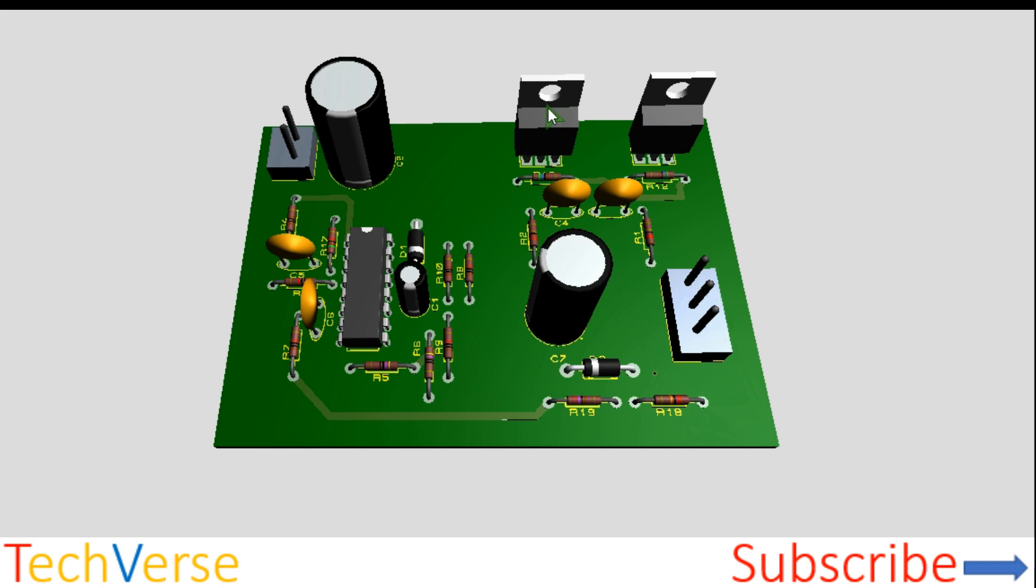For the MOSFETs you'll be using the IRF3205. If you use any MOSFETs, the output and performance depend on the current handling capacity of the MOSFETs. So this is the AC output, and this is the output filter capacitor and the diode as well as the resistor divider network.